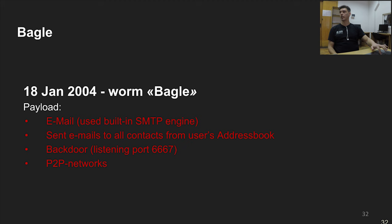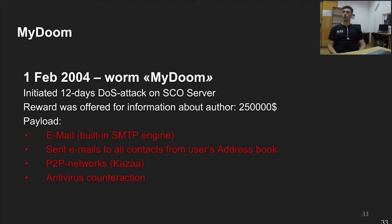Also in 2004, the MyDoom worm appeared. The author initiated a 12-day attack on the SCO server — a company producing a Unix-based operating system that offered a $250,000 reward for information about the author. MyDoom's payload included sending emails with itself using the Windows address book and spreading through peer-to-peer networks like Kazaa. It also had antivirus obstruction capabilities.